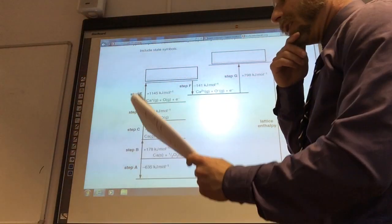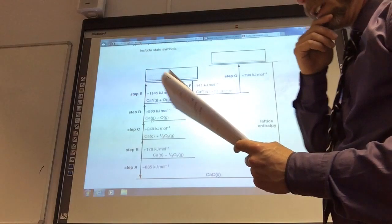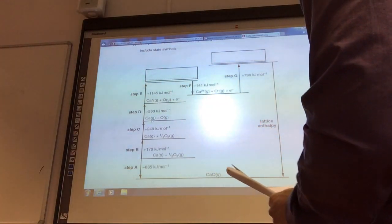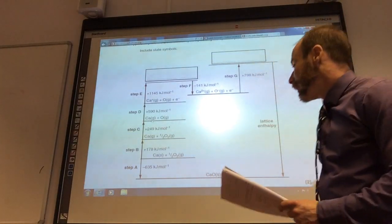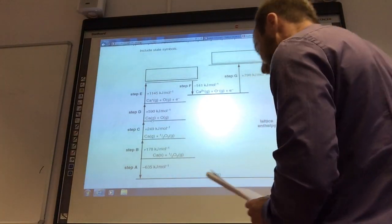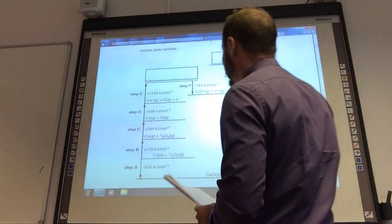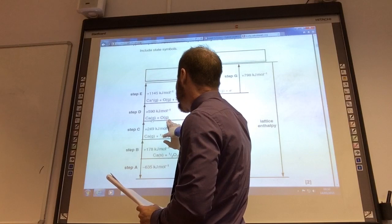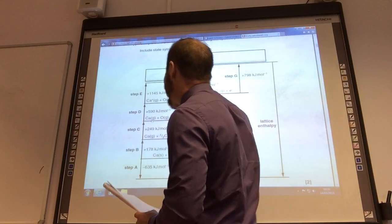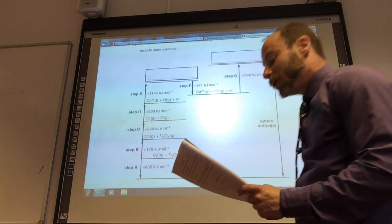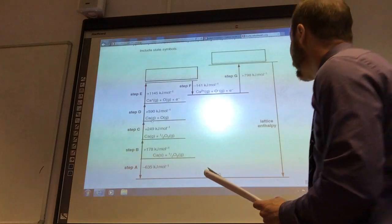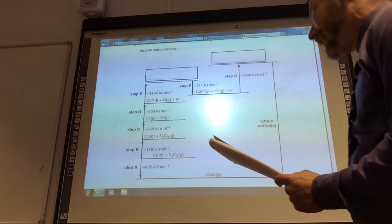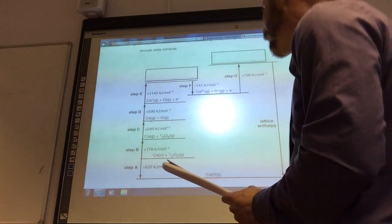Carrying on from that, the next question is going to ask me for the enthalpy changes for step A. Step A is, of course, the enthalpy formation of calcium oxide. Step C is this one. I've got a half oxygen gas becoming oxygen atoms. That is the atomization energy of oxygen. And finally, step G, which I've just said, is going to be the second electron affinity of oxygen.